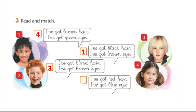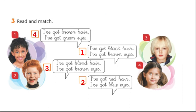Okay, the last one: I've got red hair. I've got blue eyes. In which picture is there a child with red hair and blue eyes? Number two, the last one left. He has red hair and blue eyes. So I'm going to write number two in the box next to: I've got red hair. I've got blue eyes. Good job, class.